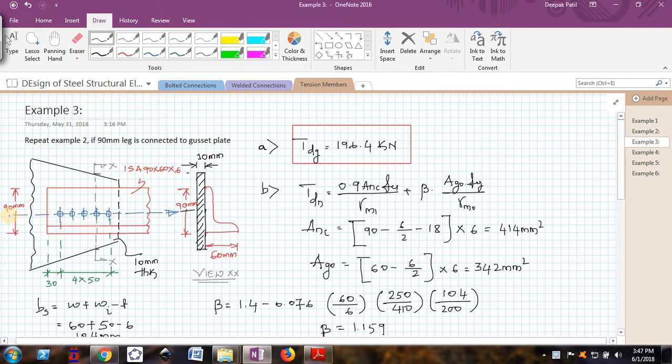Here you can see that I have connected a 90 mm leg to the gusset plate and the 60 mm leg is an outstanding leg. Now when I try to find out the design tensile strength for this case of a connection,